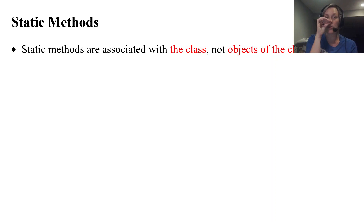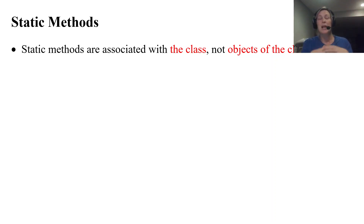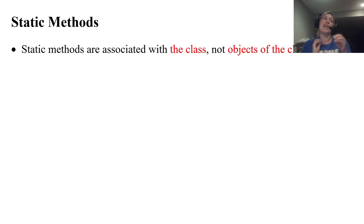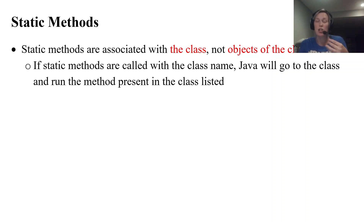Static methods are associated with the class and not objects of the class. Up until this point in this unit, we have been creating an object-creating class — having variables and methods that deal directly with objects created from that class. Now we're moving into static methods, which can be run but are not associated with any sort of object. You call on a static method with dot notation: the class name followed by dot notation, and Java will go to that class and run the method present there.